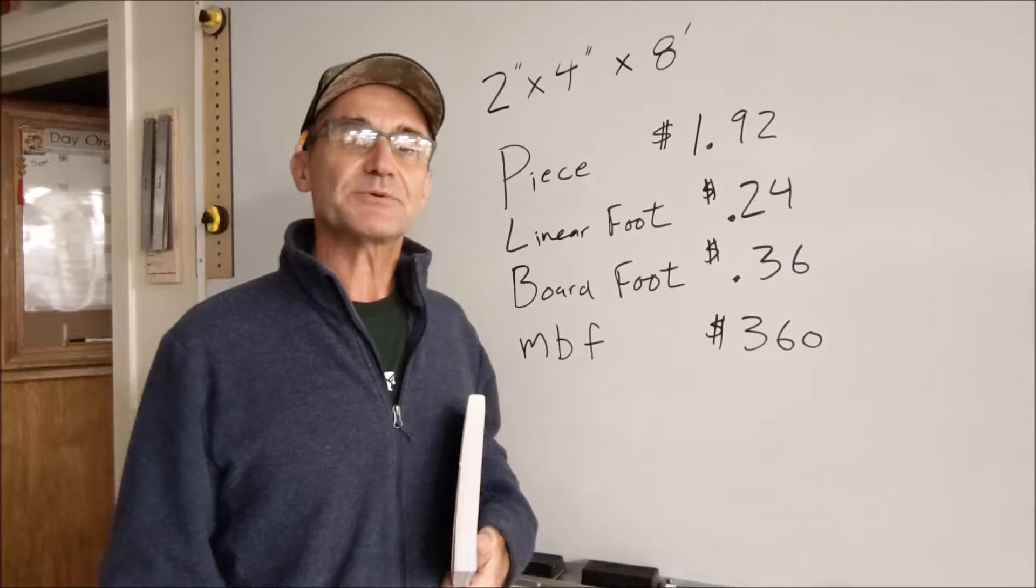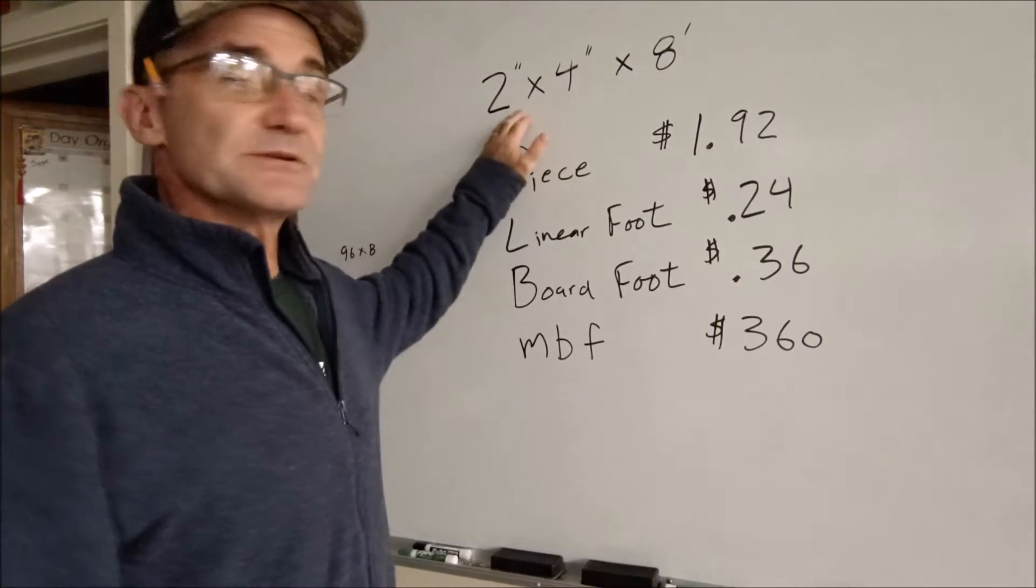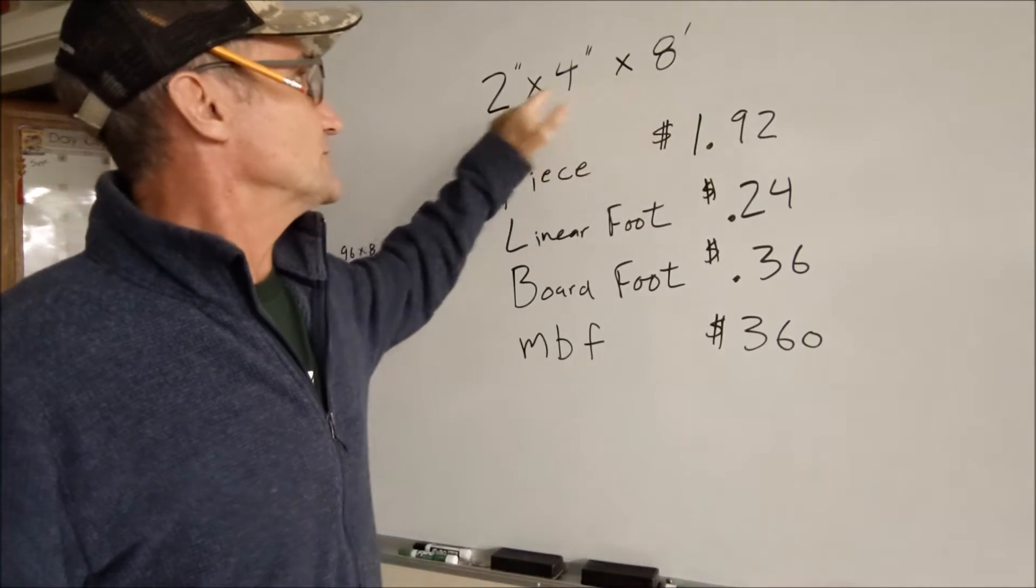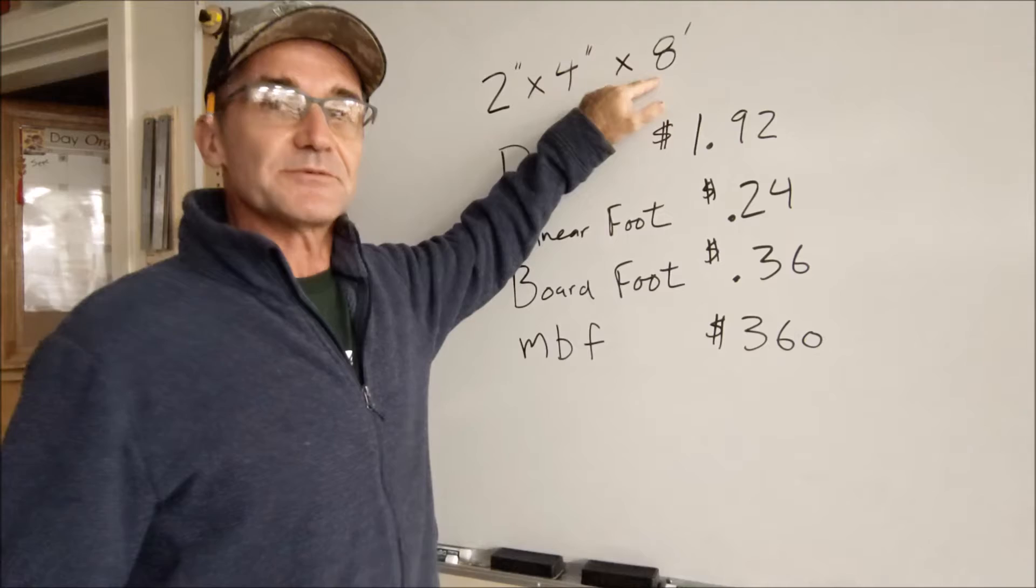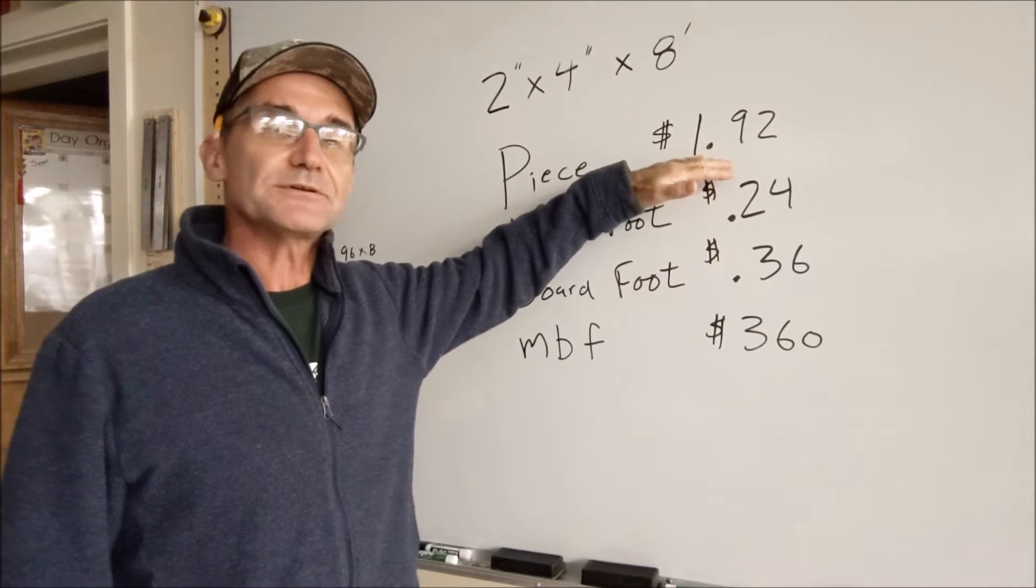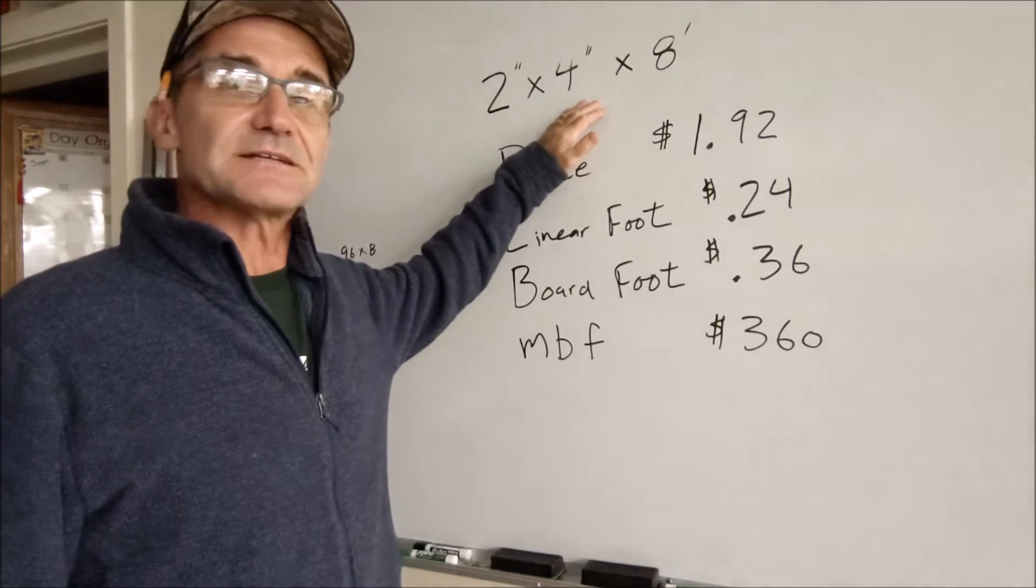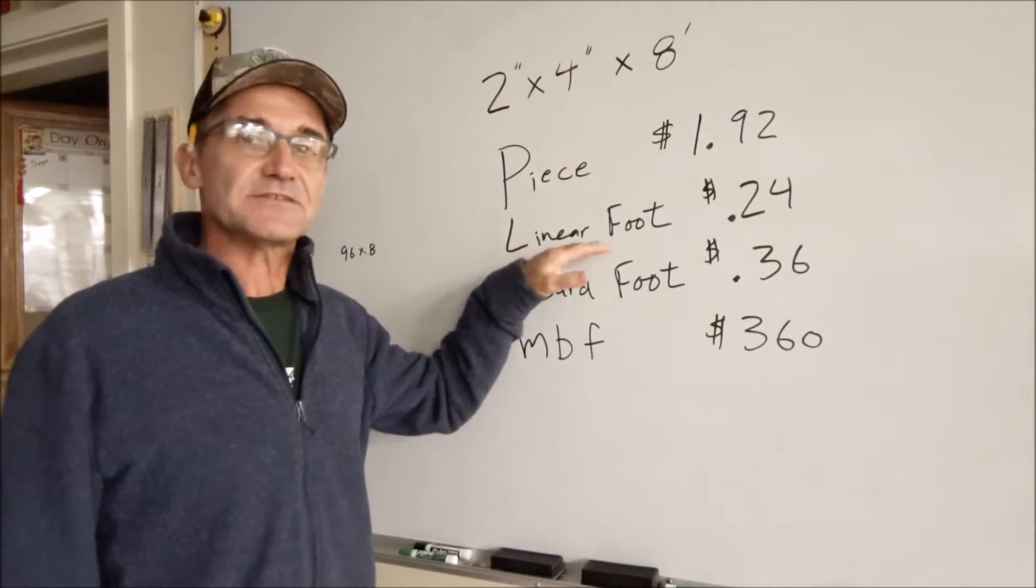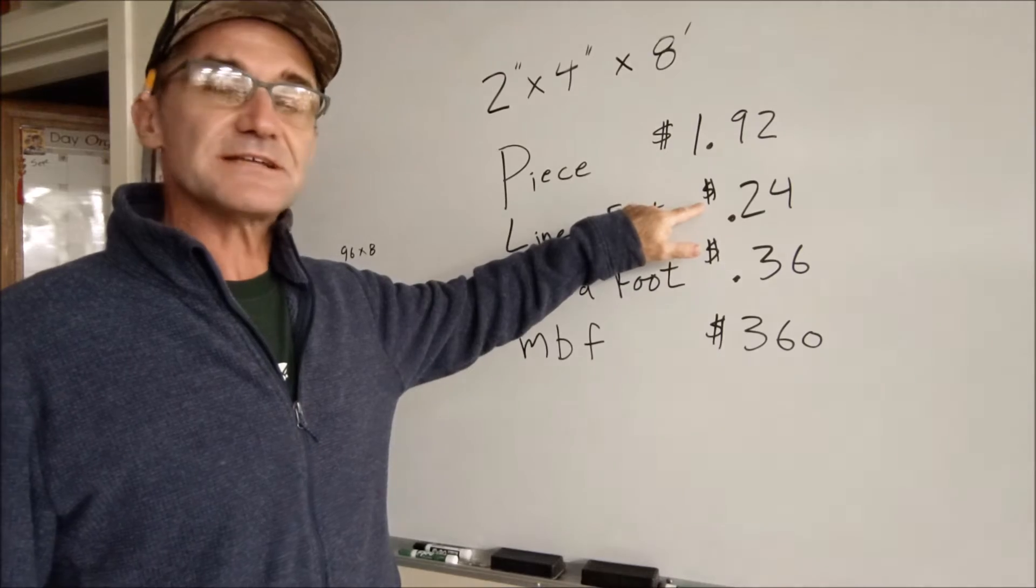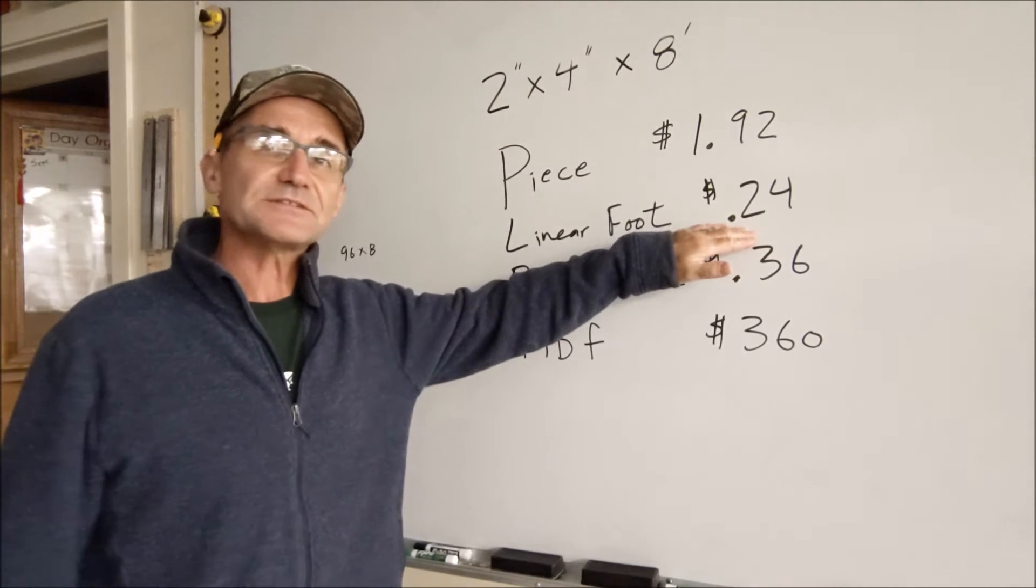There are four primary ways they price lumber. Let's take a look at a two by four eight foot long - two inches by four inches by eight foot long. Inch marks are double ticks, single tick is feet. So two by four by eight could be sold by the piece. The piece would be $1.92 for that board. That's a pretty common way to do it at a home improvement store. The second way they could sell a two by four is by the linear foot. Let's say it's 24 cents a linear foot. 24 cents a linear foot is a common way to do it.